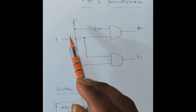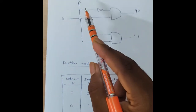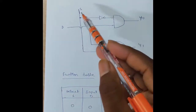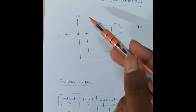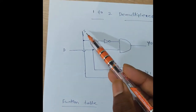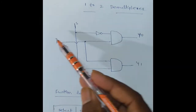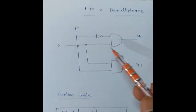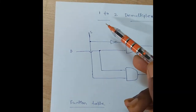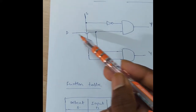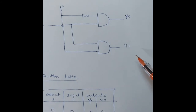When S is zero, the output Y0 is selected. When S is one, the output Y1 is selected. If S is zero, whatever input is given to D is transferred to Y0. If S is equal to one, whatever input is given to D is transferred to Y1.